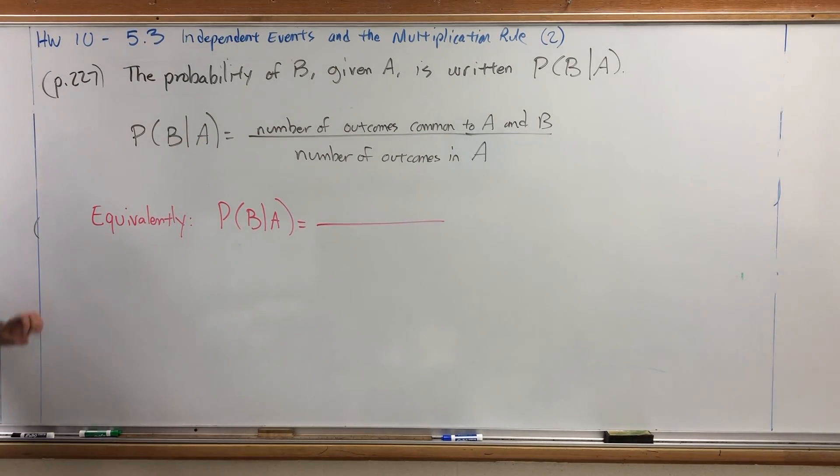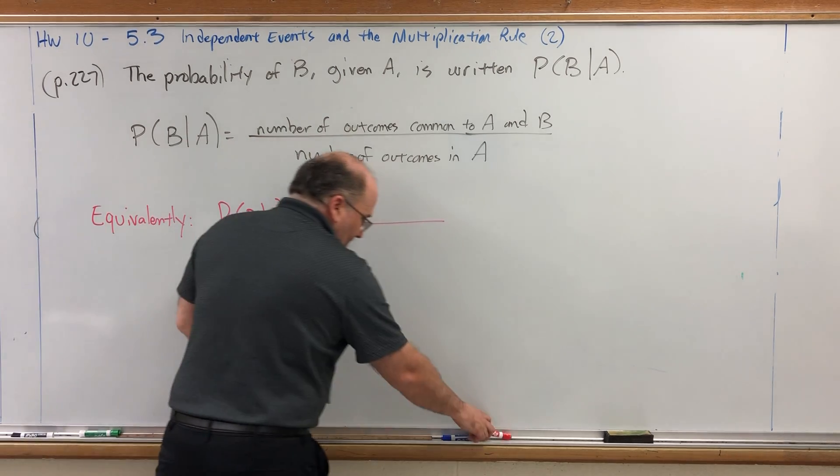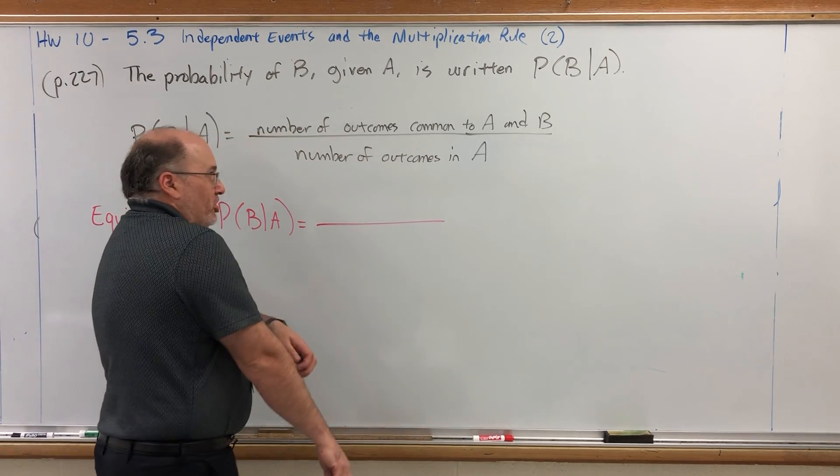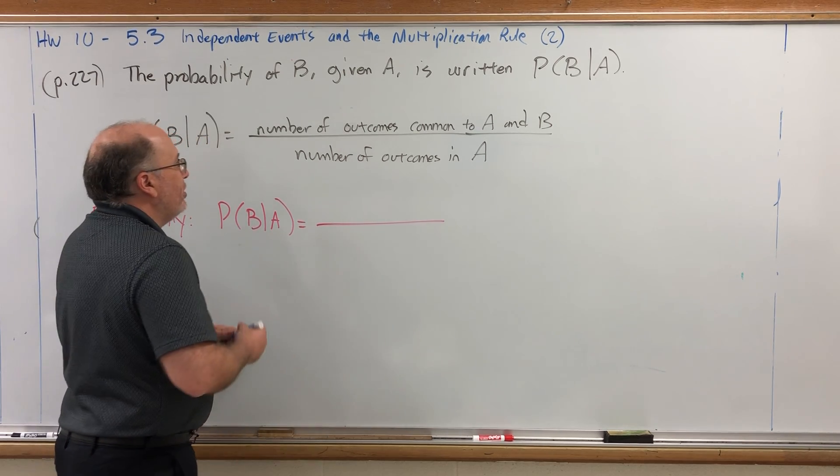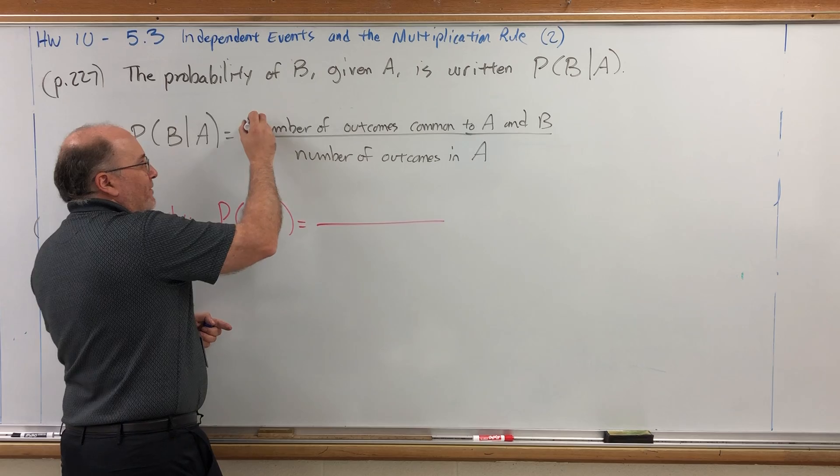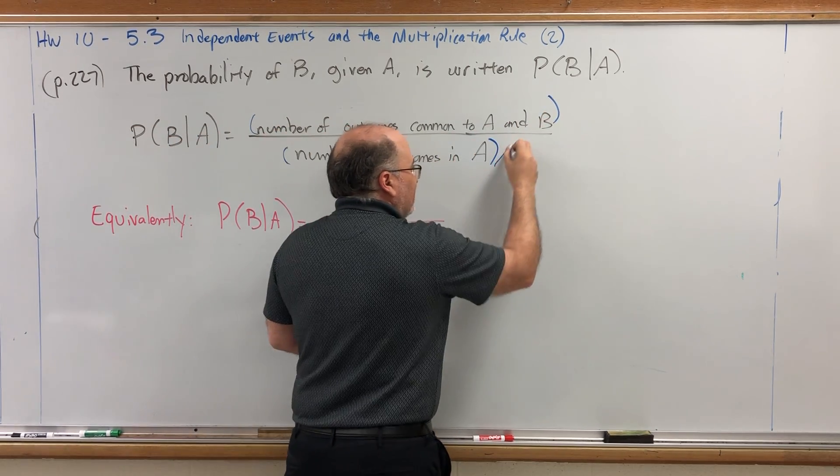And the way that you can calculate conditional probability based on other probabilities is to do a little bit of an algebra trick on this definition. In a fraction, you can multiply or divide both sides by the same number. So, for example...